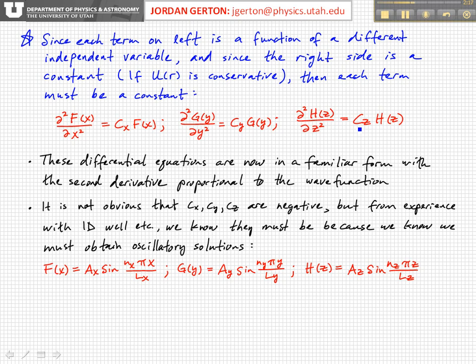So it's not obvious at this point that cx, cy, and cz are negative, but we know that they must be because we know from experience with the one-dimensional well that we have to obtain oscillatory solutions. So we can write down the solutions inside the box because of what we found in all the potentials we considered in the one-dimensional case.